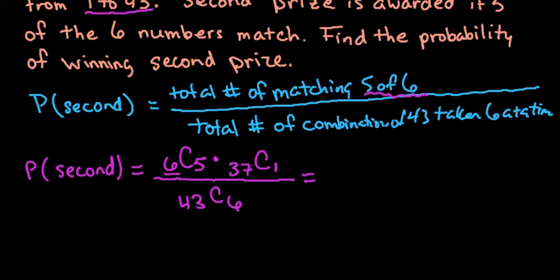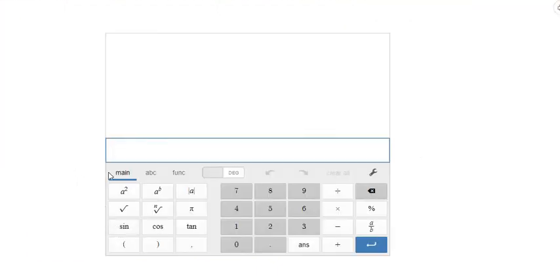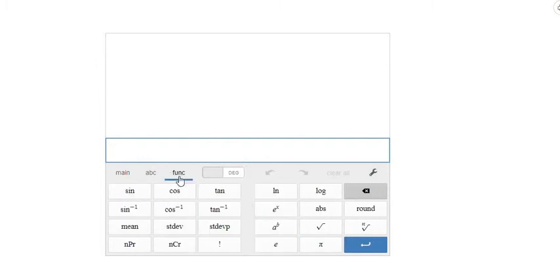I'm going to use a free online graphing calculator called Desmos, and I'm just going to pull up their scientific calculator. To find the combinations, if you hit the functions button, you'll see NPR and NCR. The NCR is our combination, so I'm going to go ahead and select that, and then I would just put in my values.